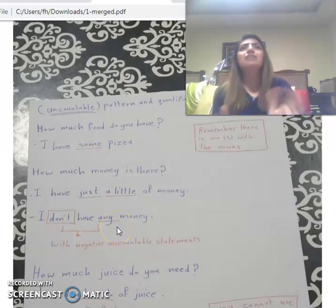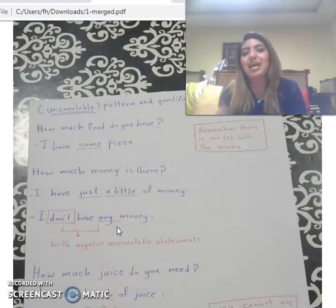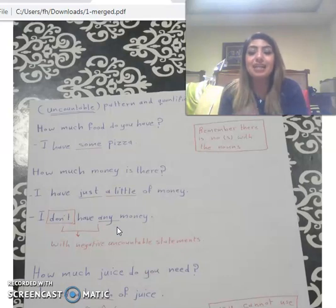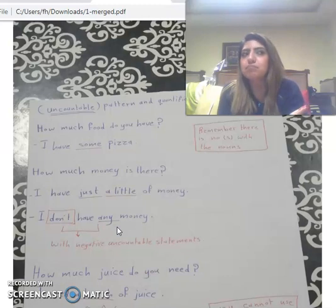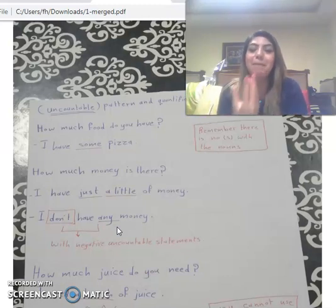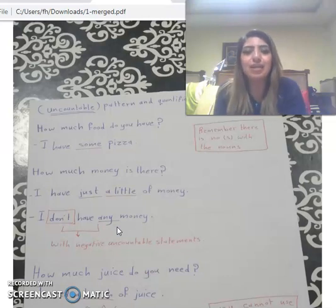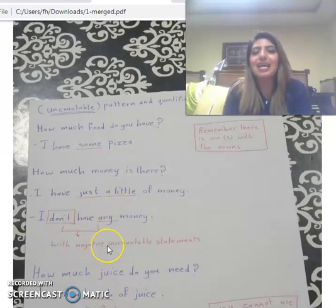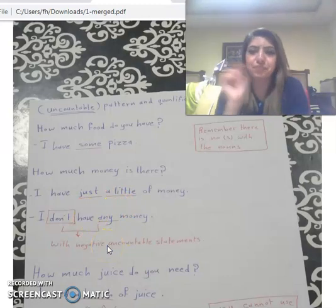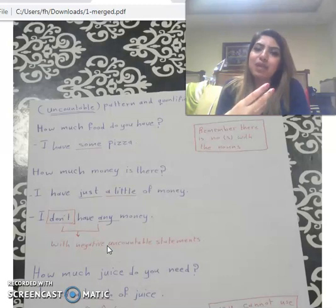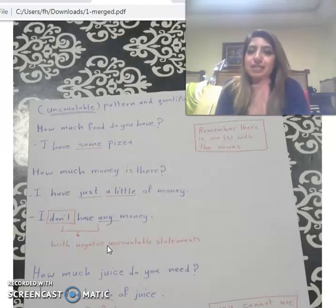'I don't have any money' makes the amount of money zero. So with uncountable nouns, when the amount is zero, we use 'any' in a negative sentence — just as with countable nouns — to show that the quantity of the uncountable noun is absent or empty.